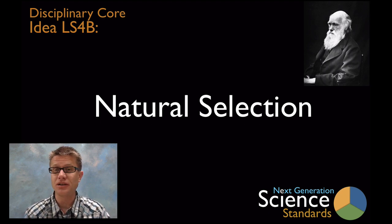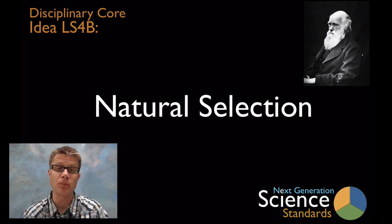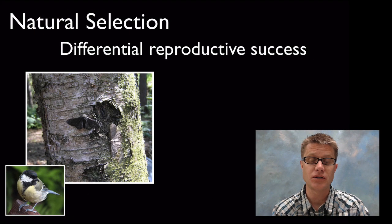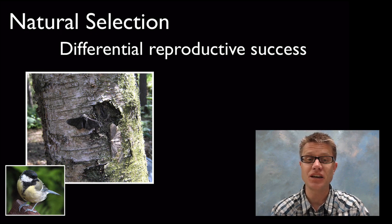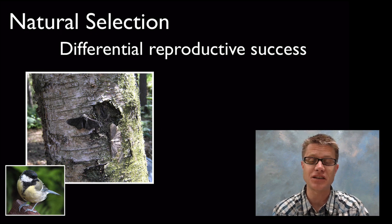A lot of people think wrongly that Darwin is famous because he came up with the idea of evolution. That's not true. What he really came up with was a mechanism that explains why evolution occurs. The definition I give my students, the one I want them to remember from the beginning of the year to the end, is 'differential reproductive success.' But we'll come to that in just a second.